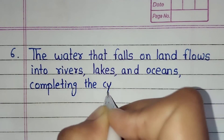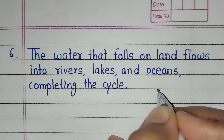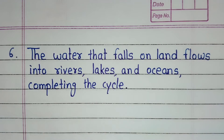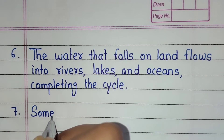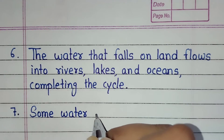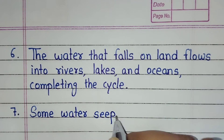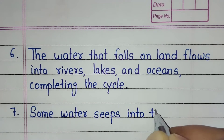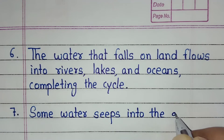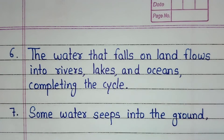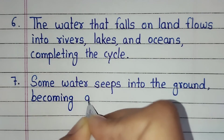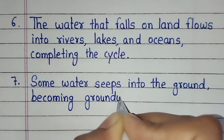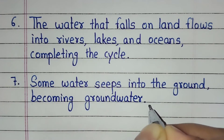The water that falls on land flows into rivers, lakes and oceans, completing the cycle. Some water seeps into the ground, becoming groundwater.